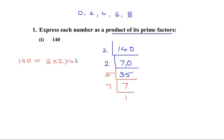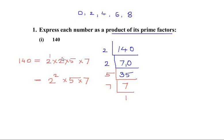So we can express 140 as a product of these factors: 2 times 2 times 5 times 7. We can also write it as 2 to the power of 2 times 5 times 7, because 2 is repeated twice. Using the laws of indices, 1 plus 1 gives us the power of 2. Both representations are correct.